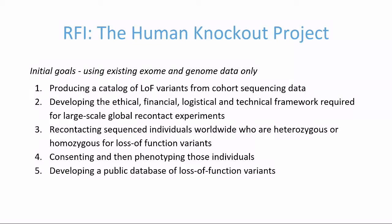Our goals in this proposal are: firstly, to produce a catalogue of loss-of-function variants from existing sequencing data across a number of IHCC cohorts and beyond. Secondly, to continue to develop the ethical, financial, logistical and technical framework required for the challenging process of large-scale global recontact experiments. Thirdly, to recontact sequenced individuals worldwide who are heterozygous or homozygous for loss-of-function variants, consent and phenotype those individuals, and then develop and release a public database of loss-of-function variants.